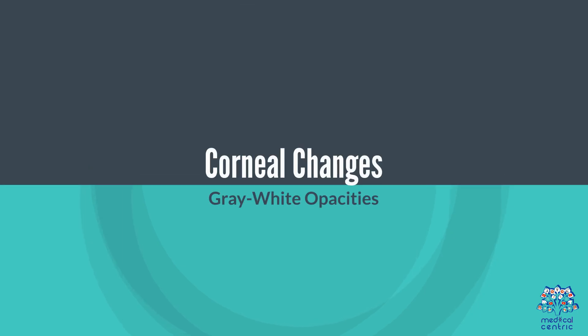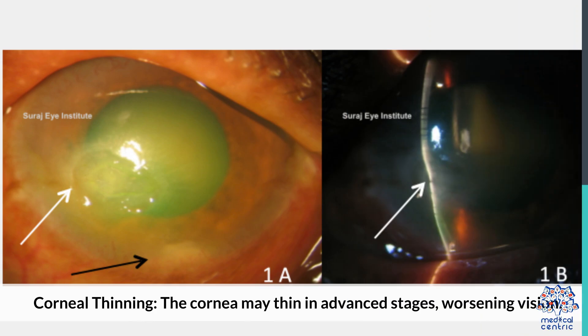Corneal changes are also observed, including gray-white opacities and corneal thinning. The cornea may thin in advanced stages, further worsening vision.